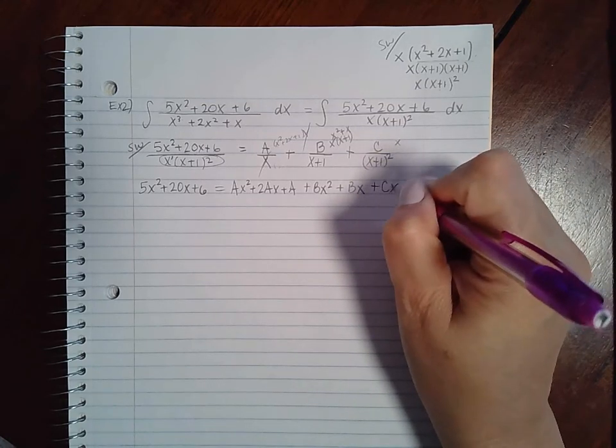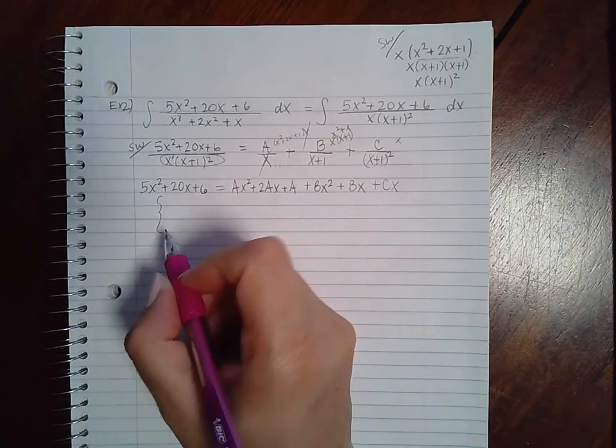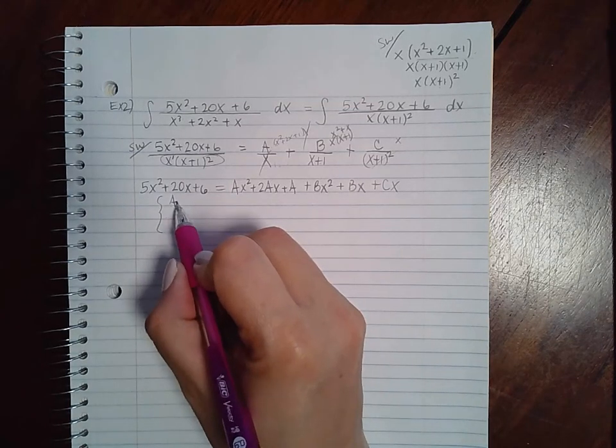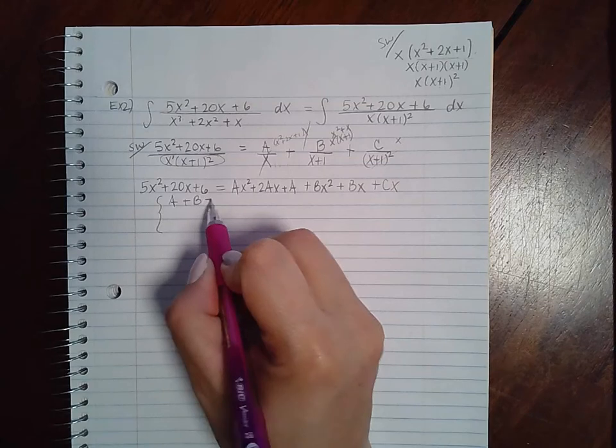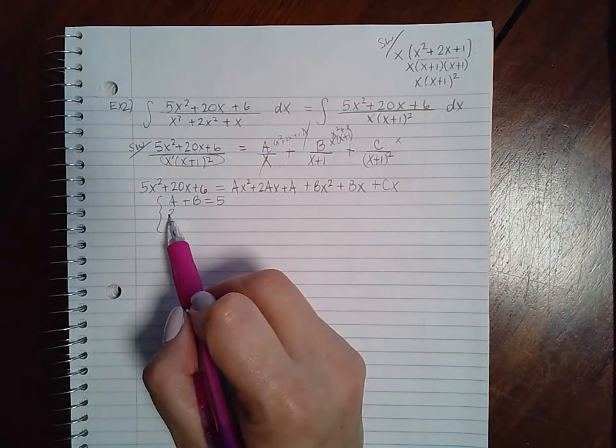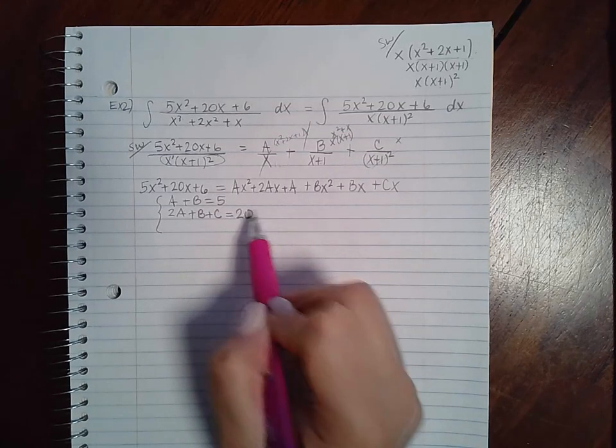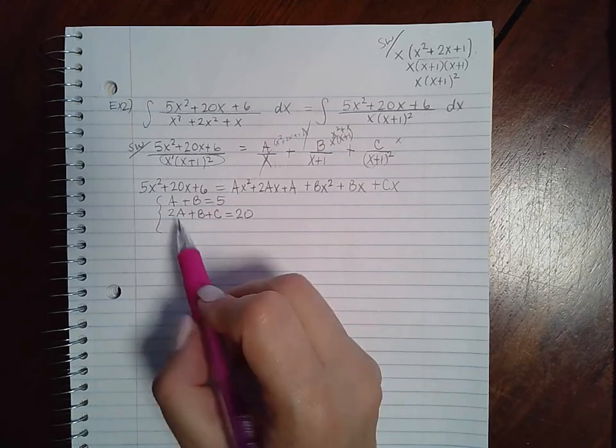So let's see, if we set up our system of equations: x squared, A plus B should equal 5. For the x's, I have 2A plus B plus C should equal 20.